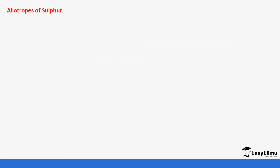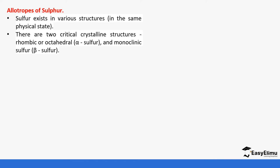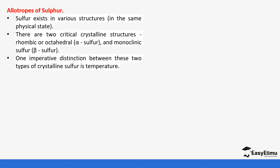Allotropes of sulfur — as you know from Form 2, allotropes are defined as the existence of elements in more than one form in the same physical state. Sulfur usually exists in various forms in the same physical state. We have two crystalline forms: rhombic and monoclinic sulfur.